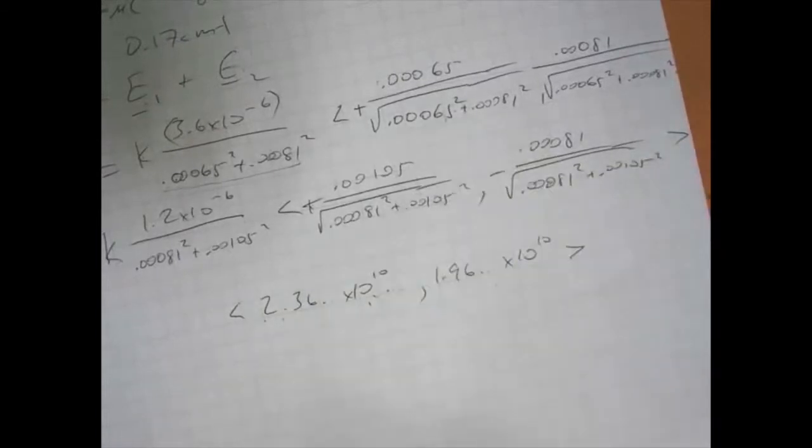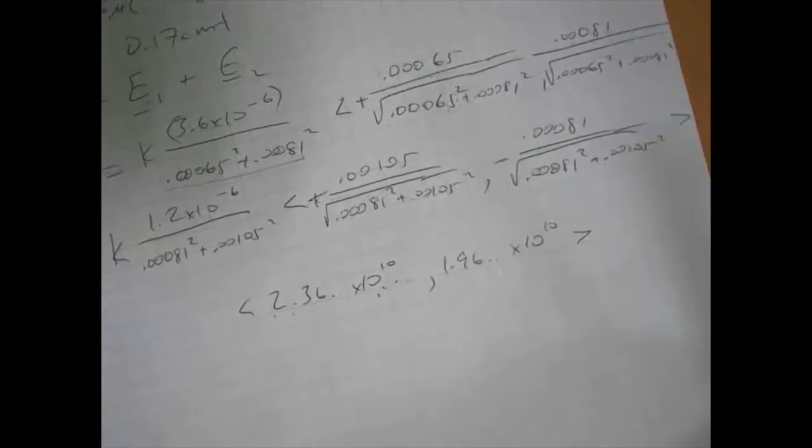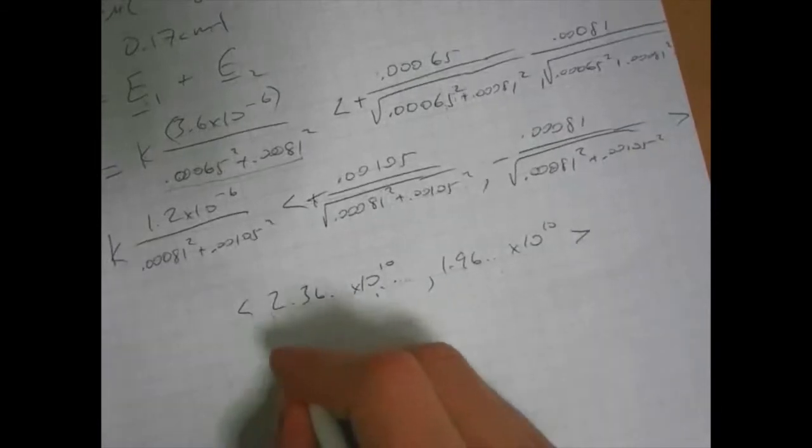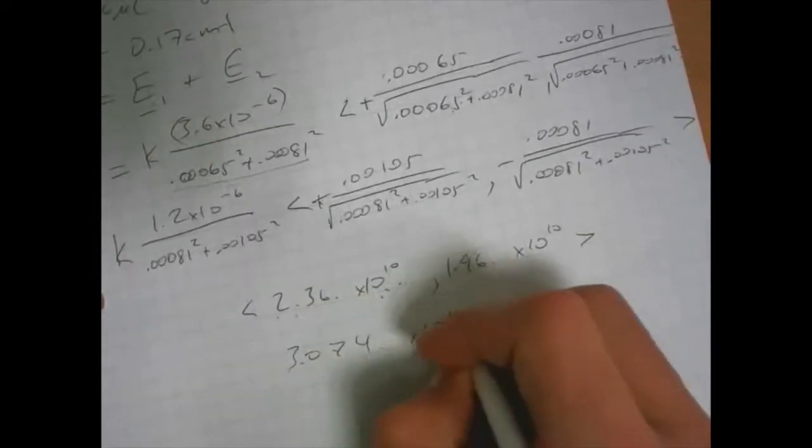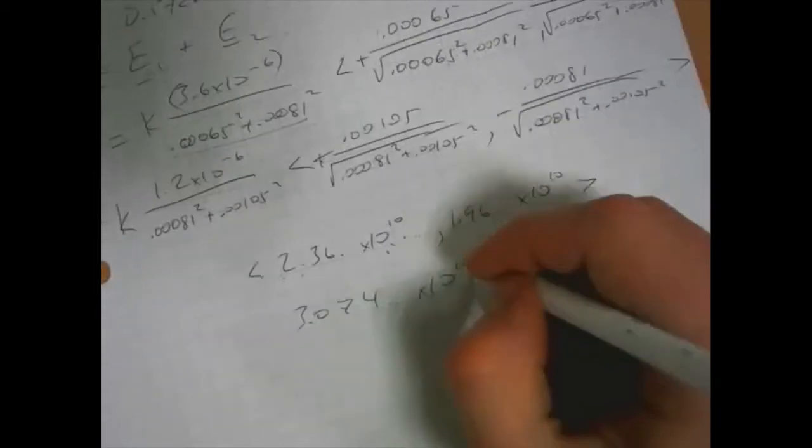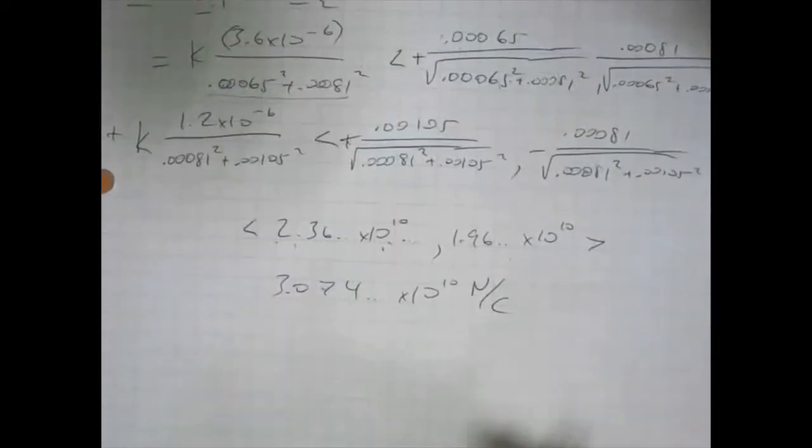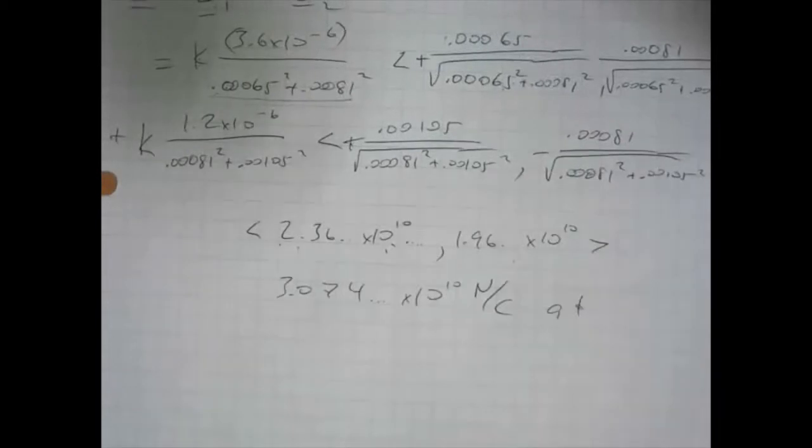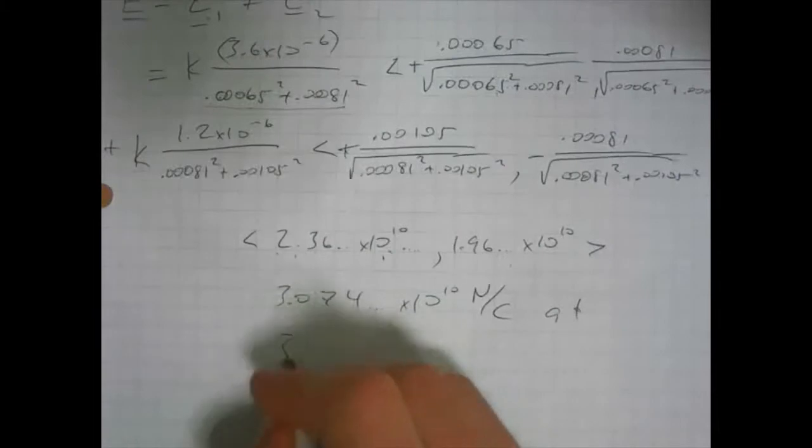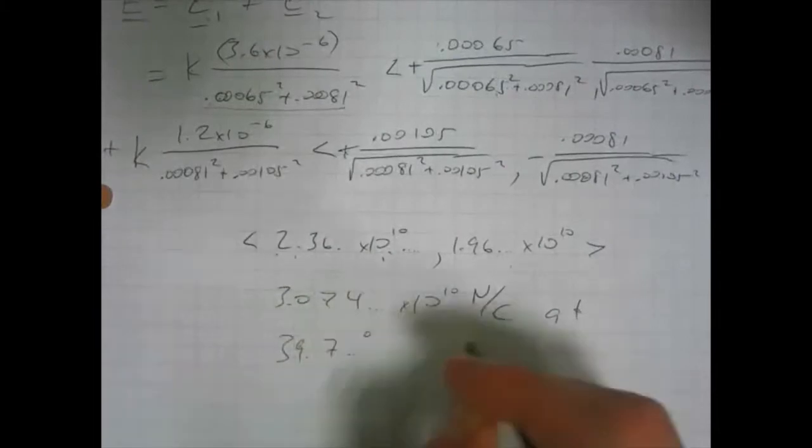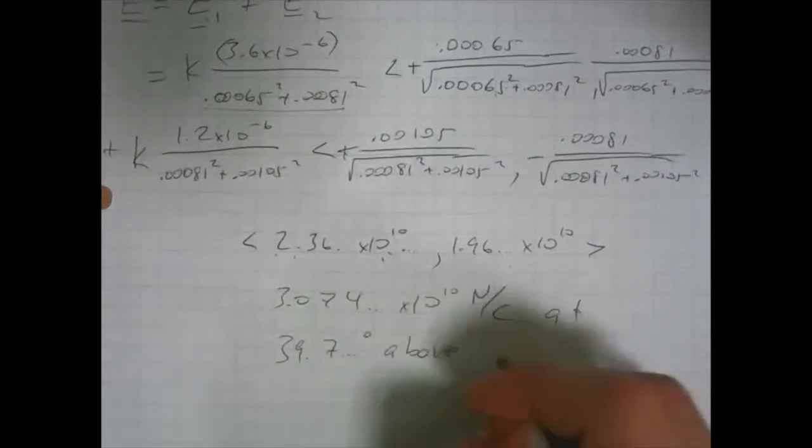And then we do our find our magnitude and direction, just like always, and this comes out to 3.074 times 10 to the 10th newtons per coulomb. And our angle, let's do the arc tangent of y over x, positive x component, positive y component, so that's at 39.7 degrees above the positive x axis.